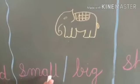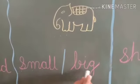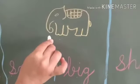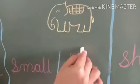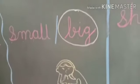S-M-A-L-L, small, small means chota. And B-I-G, big, big means bada. Elephant is big or small? Big. So circle on B-I-G, big.